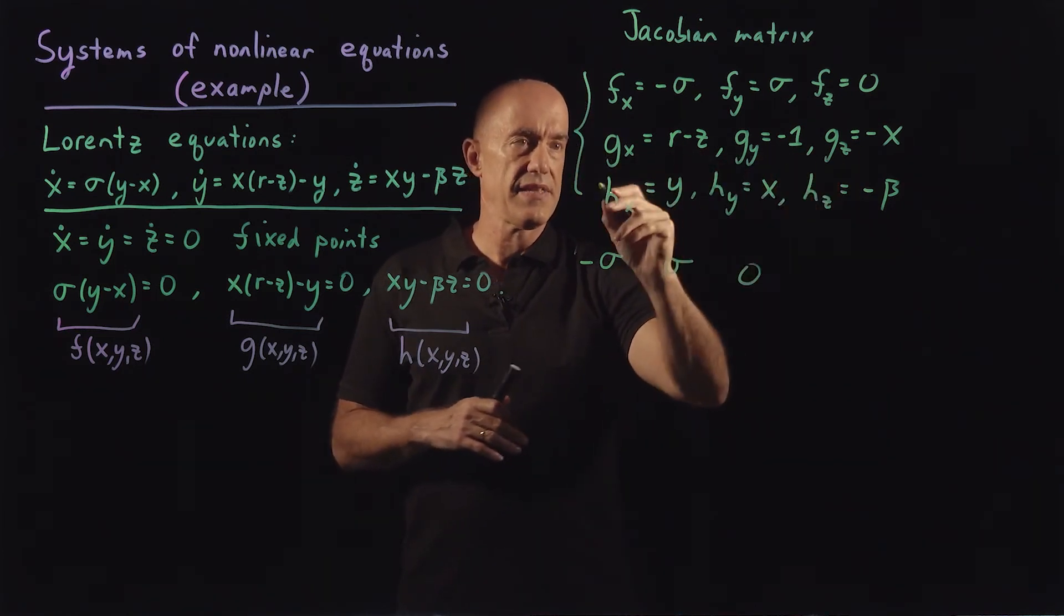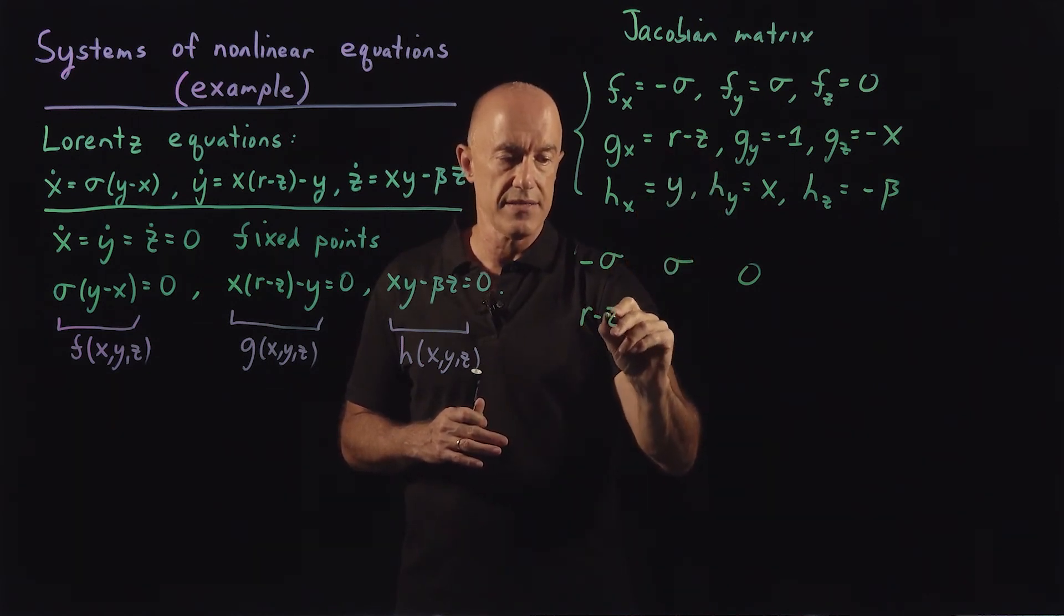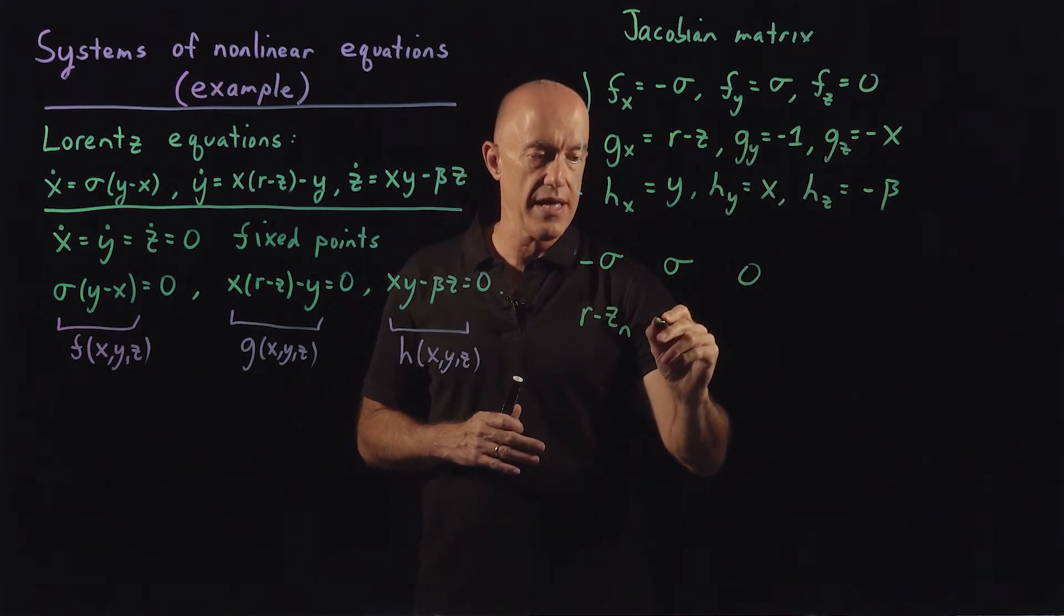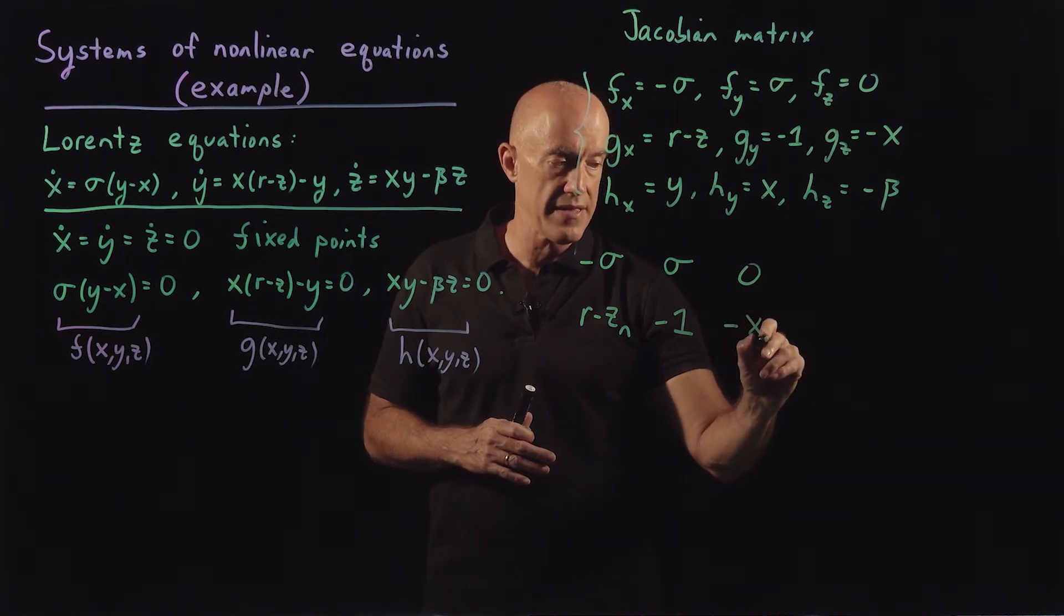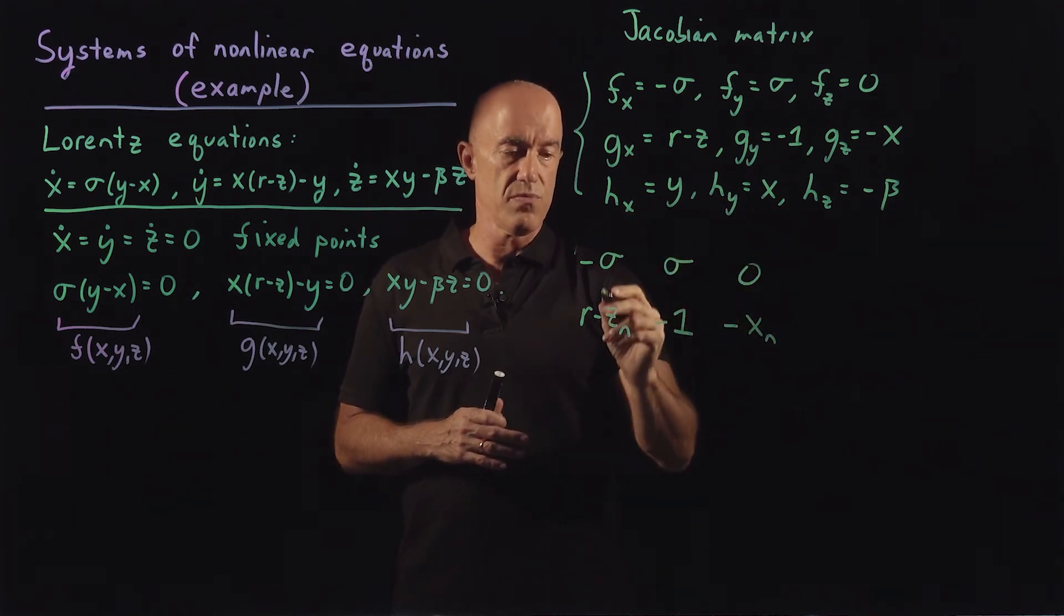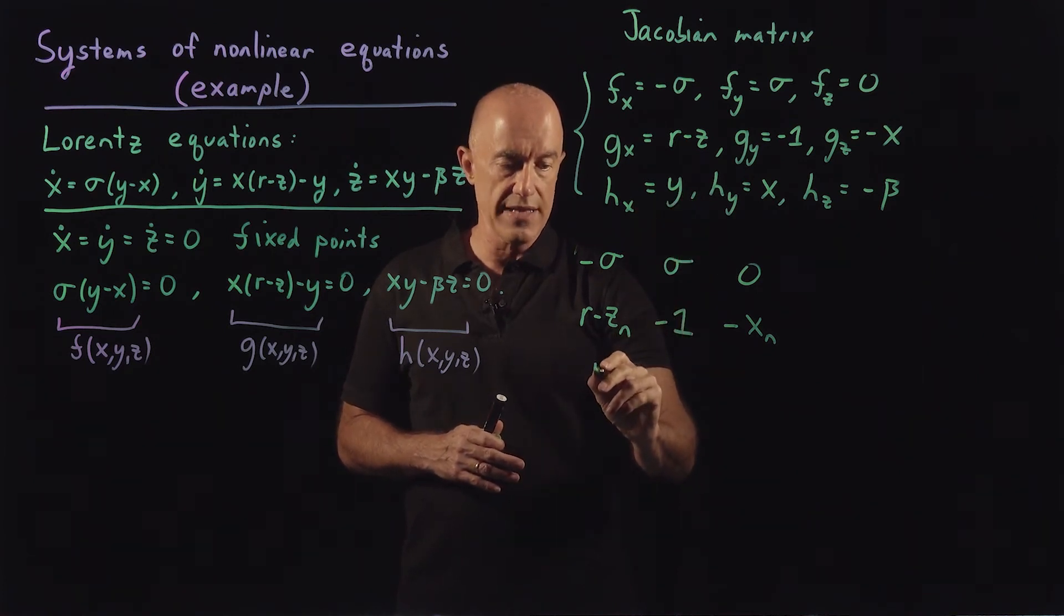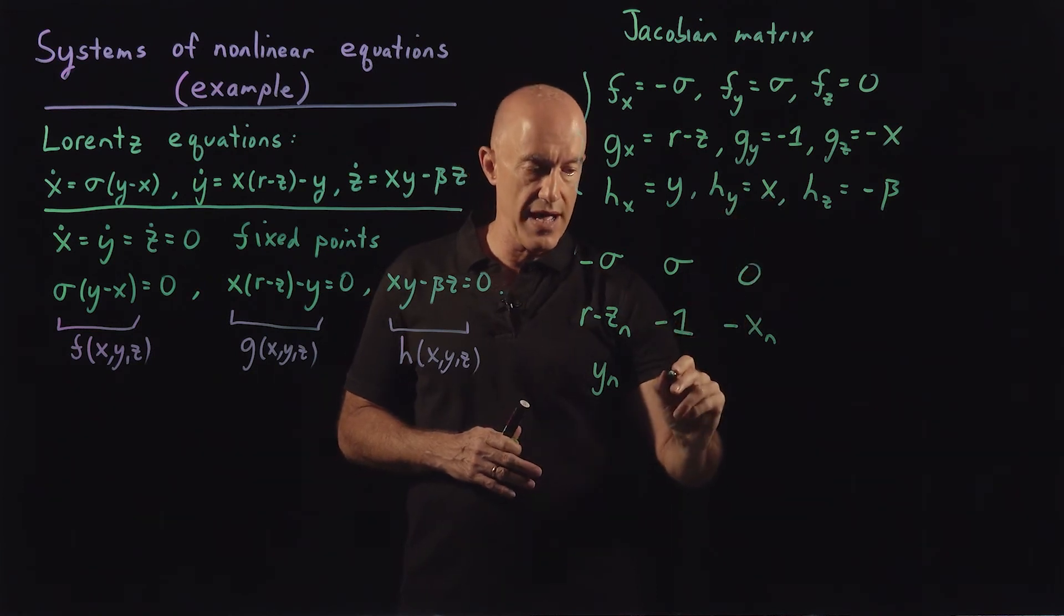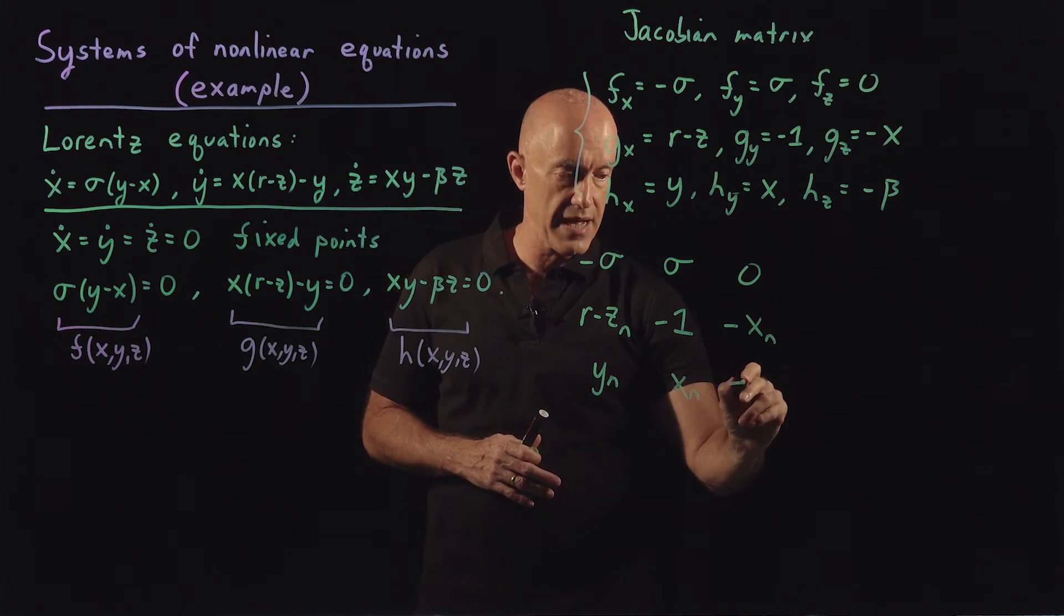g_x at the nth stage of the iteration will be r minus z_n, the nth value of z. g_y is minus 1, and g_z is minus x_n, the nth value of x. And then the third row of the matrix will be the h partials, so h_x will be y_n, the nth value of y. h_y is x_n, the nth value of x, and h_z is minus beta.